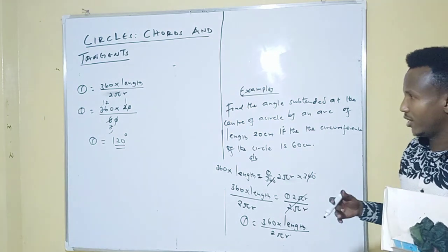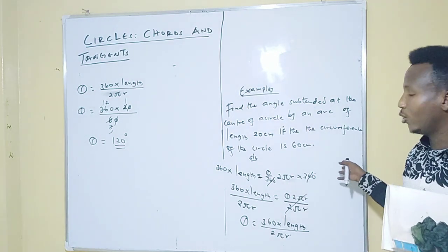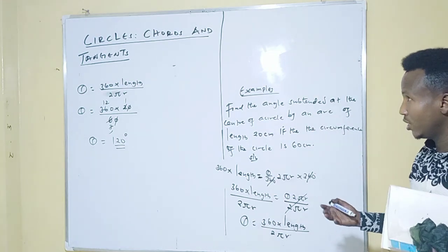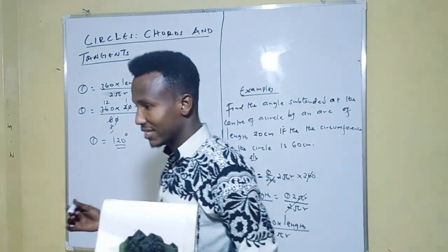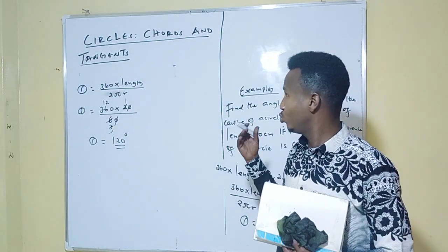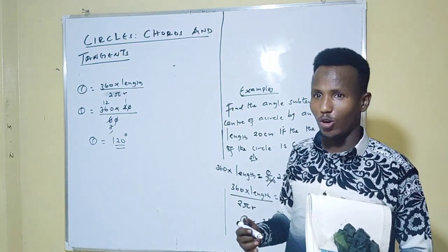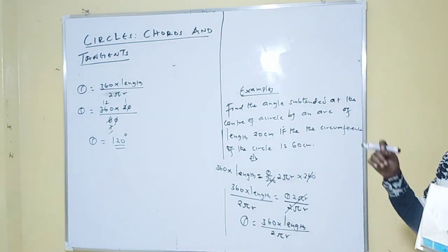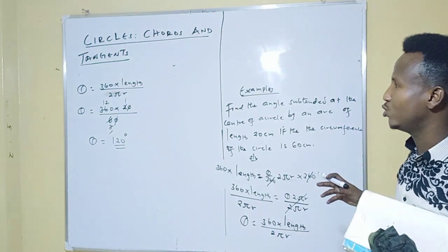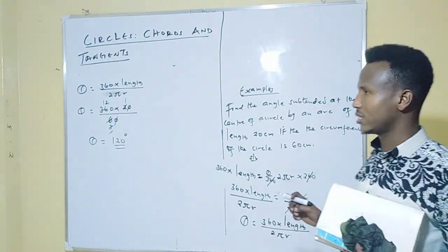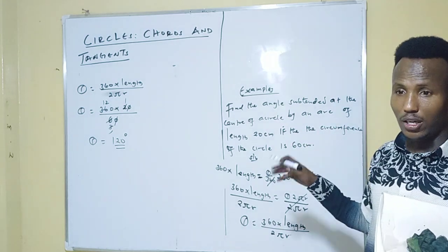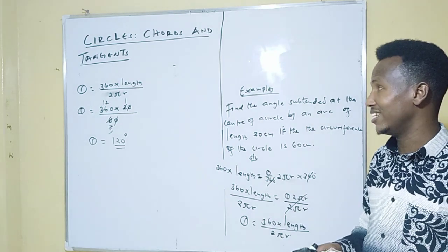Now you must know how to get length, how to get radius, and how to get theta — these are the three key concepts. The variables are theta and r. Given radius you can get circumference by c equals 2πr, then get theta from there. In our next class we'll see intersecting chords — internally and externally intersecting chords.